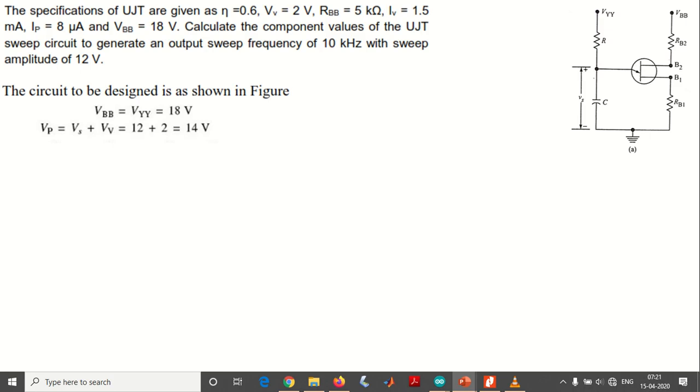Now coming to the peak voltage VP. VP equals the sweep amplitude plus valley voltage. It is the summation of VS plus VB. VV is 2 volts and the sweep amplitude is 12 volts, so the total peak voltage is 12 plus 2 equals 14 volts.